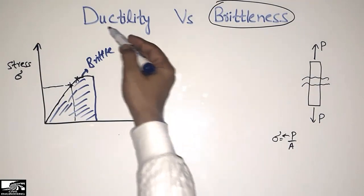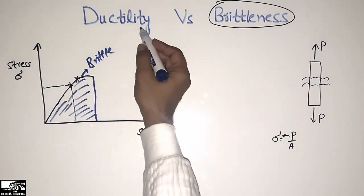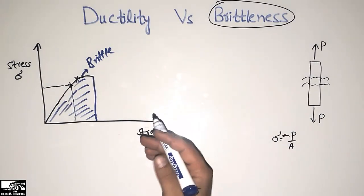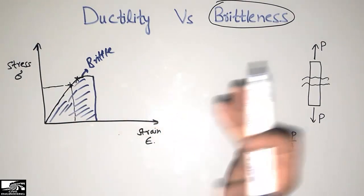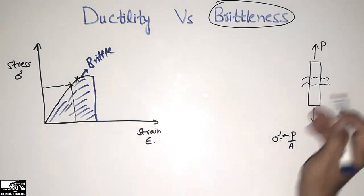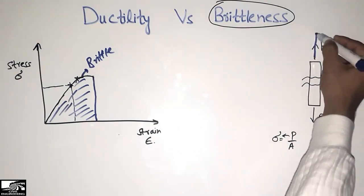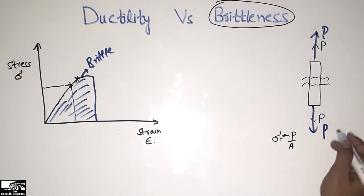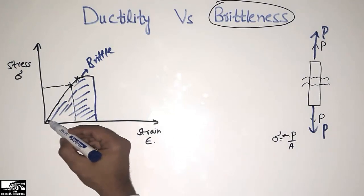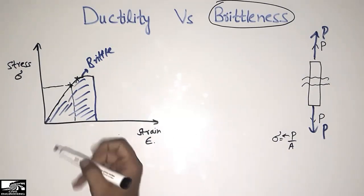Now coming to ductility — what is the ductility of a material? Ductility is the property of a material in which the material absorbs more energy and more plastic deformation occurs. Consider the same material being loaded with force P, creating the same stresses. I can now draw the stress-strain diagram for this ductile material.